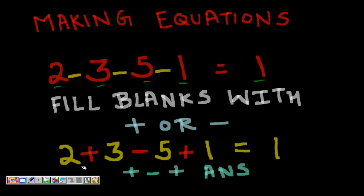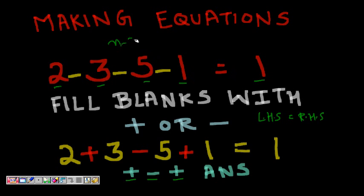For example, with two, three, five, and one: if we put plus between two and three, minus between three and five, and plus between five and one, we get 2+3=5, 5-5=0, 0+1=1, so LHS equals RHS. There are n minus two blank spaces to fill with plus or minus signs to make LHS equal RHS. This problem is called 'making equations'.